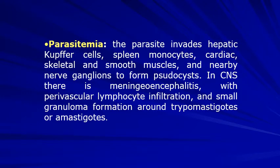Then the stage of parasitemia: the parasites invade hepatic cells, spleen monocytes, cardiac cells, skeletal and smooth muscles, involuntary muscles, and nearby nerve ganglia to form pseudocysts. The pseudocyst is a replication of amastigotes inside the muscle cells. In the central nervous system, there is meningoencephalitis with perivascular lymphocyte infiltration and small granuloma formation around the trypomastigotes or replicating amastigotes. This is a transient inflammatory reaction in the brain as the trypomastigotes try to escape from the immune reaction of the body.